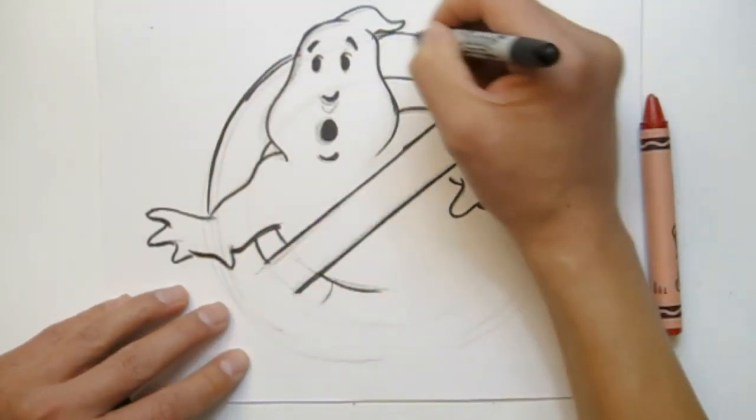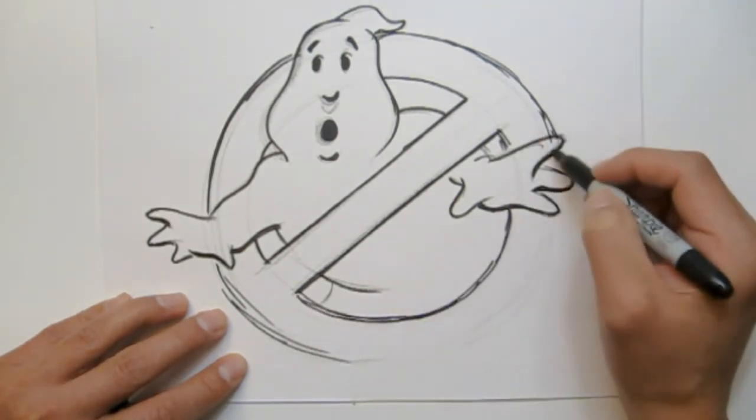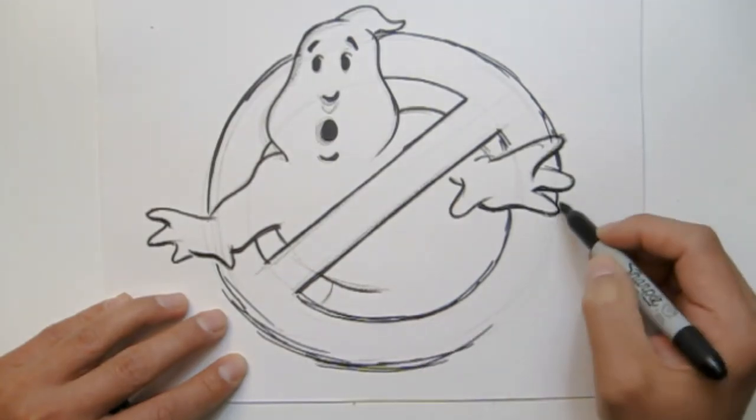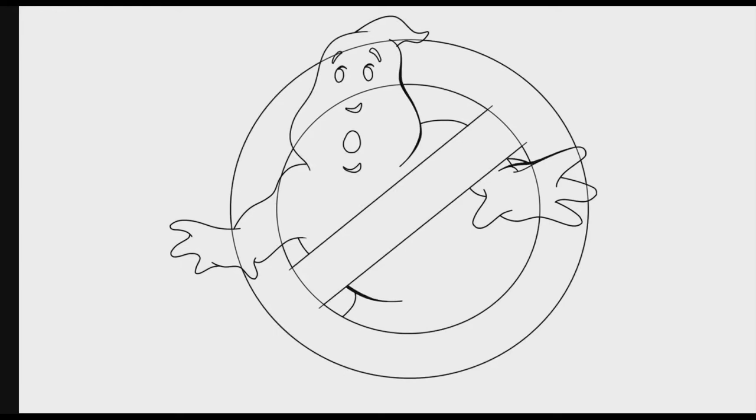So now I'm just outlining the circle. And once it's done, I'm taking it into Photoshop. Zoom out.